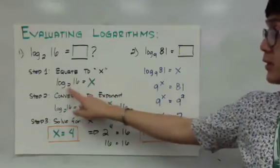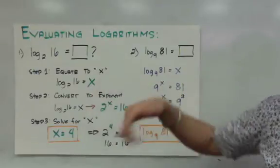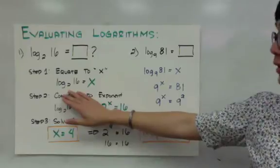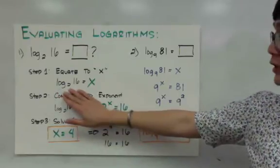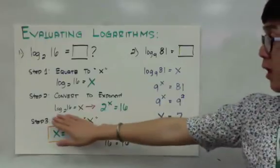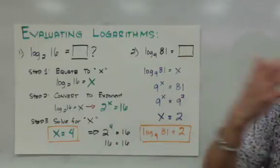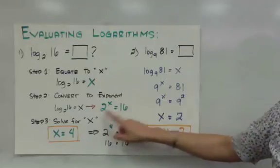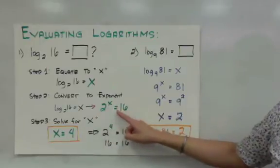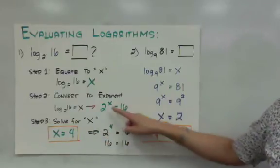Now we have logarithm of 16 base 2 is equal to x. What we can do is convert it into a more familiar form — the exponential function. In our head, we know that it becomes 2 raised to x equals 16. We can then solve for x by thinking of what power we can raise 2 to in order to get 16. The exponent we need is 4, because 2 raised to 4 equals 16. Therefore, x is equal to 4.